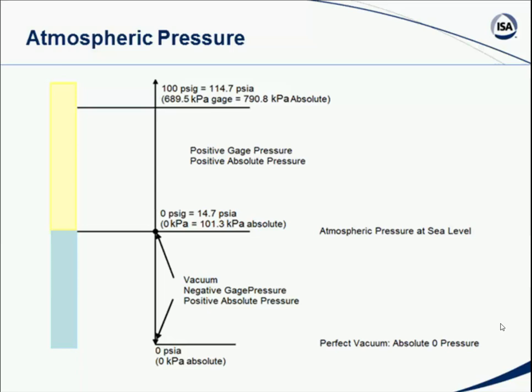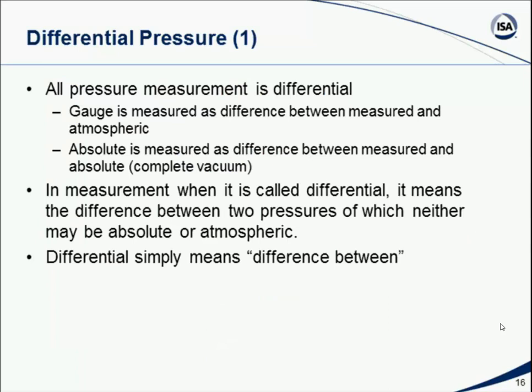In many cases, we're actually dealing with what's called differential pressure — and in fact all pressure measurements for the most part are differential. Gauge pressure measures pressure relative to atmospheric pressure, so a positive number is greater than 14.7 PSI and a negative number is less. Absolute pressure measures pressure relative to vacuum, which is 0 PSI absolute. Differential pressure — usually written as delta P or DP — means the pressure difference between two given pressures. Those pressures may or may not be absolute or atmospheric.